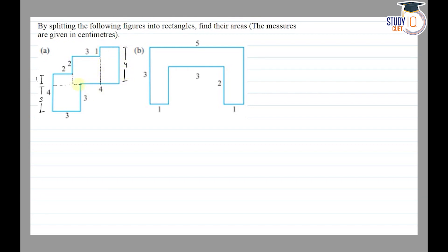This side is 4. We have the same here — 2 minus 4 — so this raised part is 2 cm. We give names to the shapes: 1, 2, 3, 4.